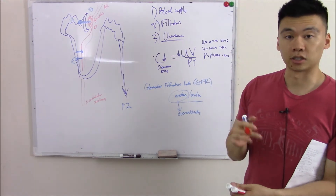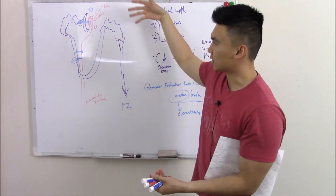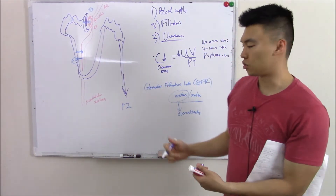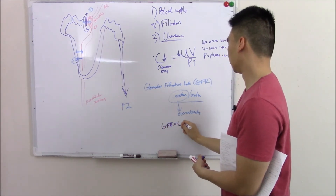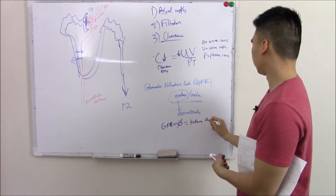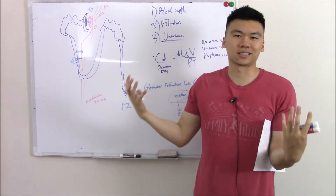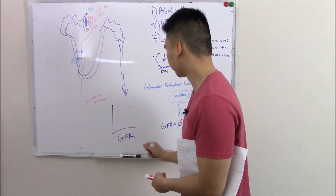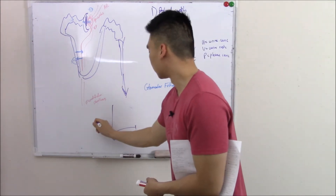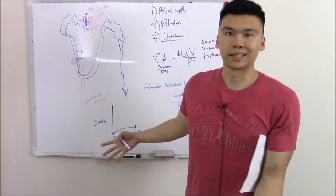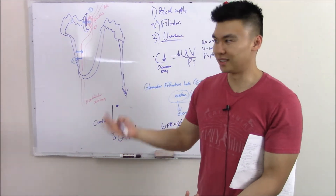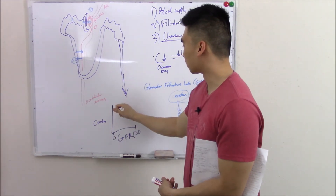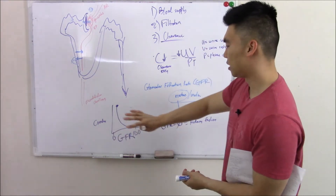Because that's what your kidneys do — they filter stuff. If your kidneys are shot and don't work, you'll no longer be able to filter anything, so GFR drops to zero. GFR equals zero equals kidney failure. If we look at it graphically, with GFR on the x-axis going from zero to 100 and creatinine on the y-axis: if GFR is zero, creatinine will be sky high. But as GFR increases and you're filtering stuff, creatinine will decrease.